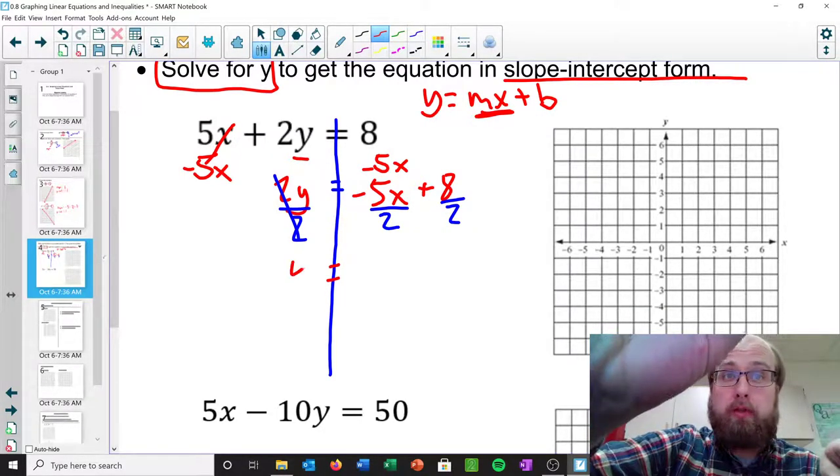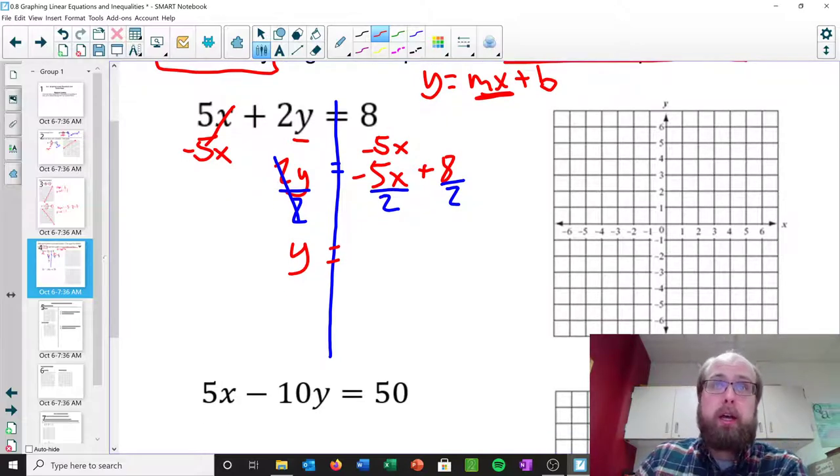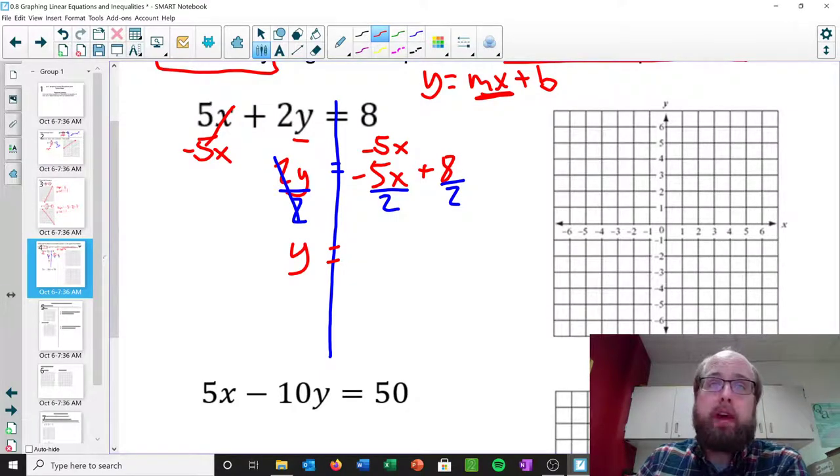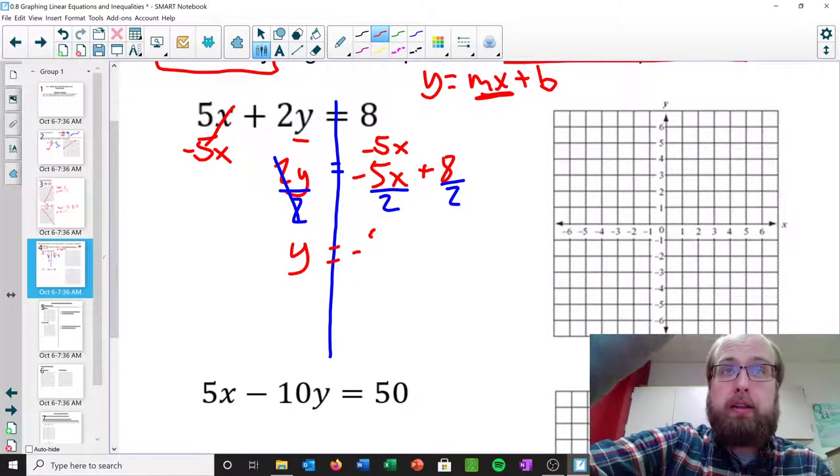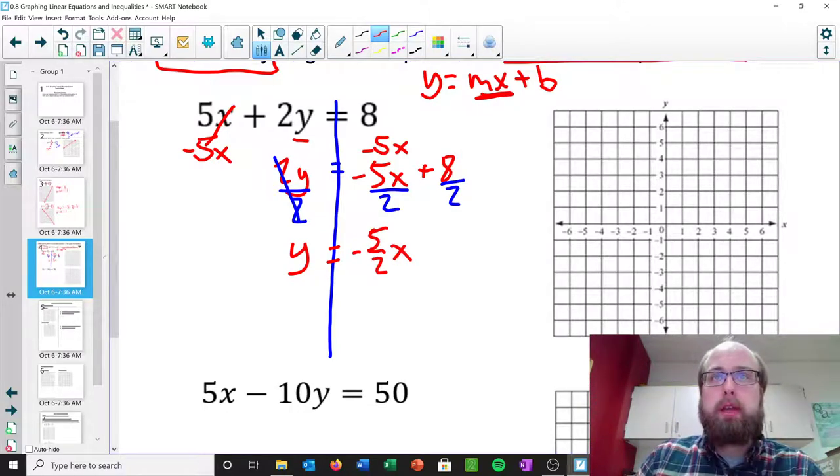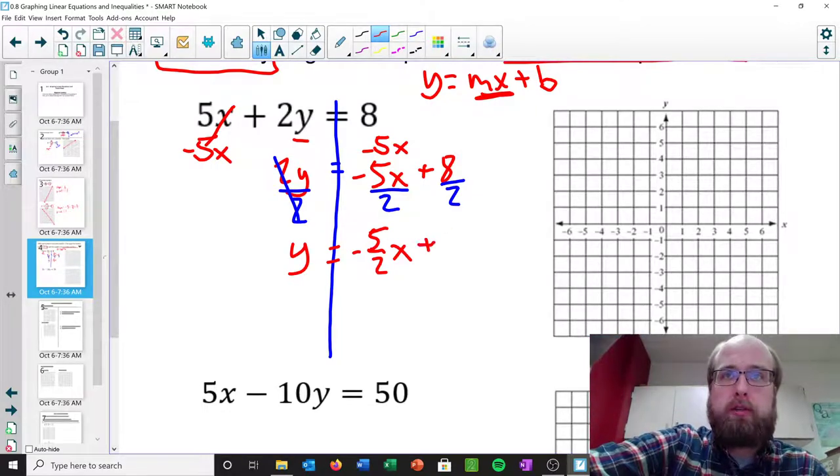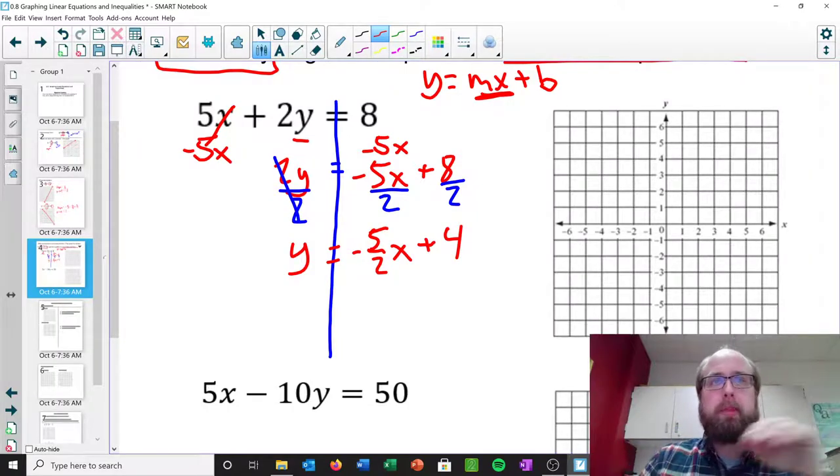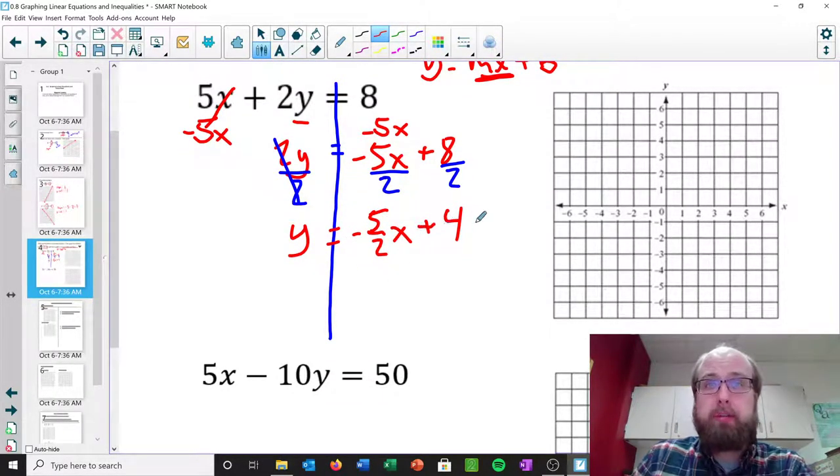Okay? So we do that, and what will we be left with? Well, left-hand side, we'll have y, just like we wanted. Right? We wanted to get y alone. And on the right-hand side, we just have to deal with each individual term. Negative 5x divided by 2. Well, that can be rewritten as negative 5 over 2x. And then 8 over 2, well, that will be plus 4. And so that's our equation, y equals negative 5 halves x plus 4.